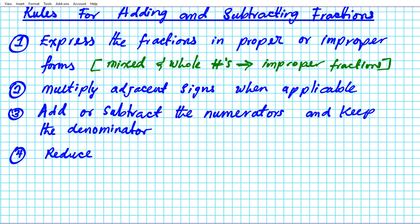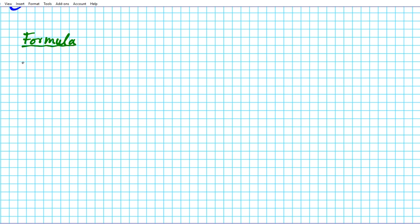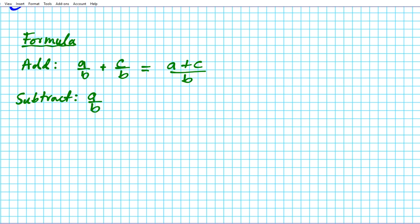So let's take a look at the formula for adding and subtracting fractions with identical denominators. The formulas are as follows: if you want to add a fraction a over b plus another fraction c over b — identical denominators — the rule is you add the numerators, a plus c, divided by the denominator b. For subtraction, a over b minus c over b: you subtract the numerators and keep the denominator.